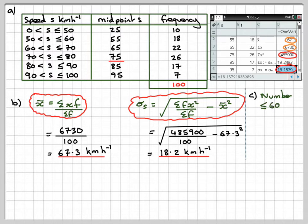The number less than 60 will be 10 plus 18 cars. 10 plus 18, which makes 28.